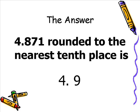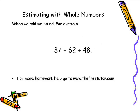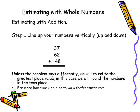Hopefully this has helped you with rounding in general. I would encourage you to continue reviewing this until you can do it on your own. Now let's use these rules to help us with an estimation addition problem. When we add, we typically round. For example, 37 plus 62 plus 48. When we do addition, it's always easy to line our numbers up vertically. Unless the problem says differently, we will round to the greatest place value. In this case, we're going to round our numbers to the nearest tens place.